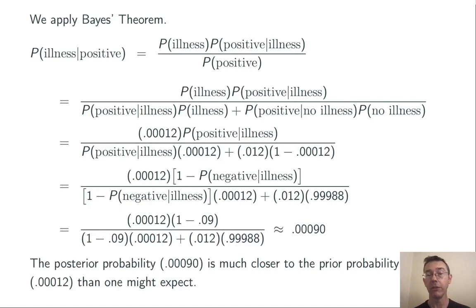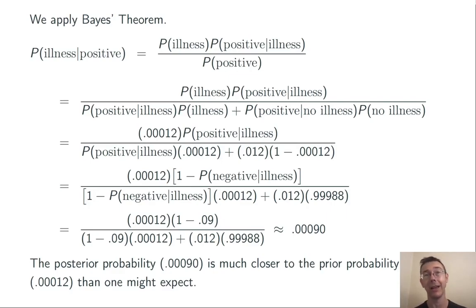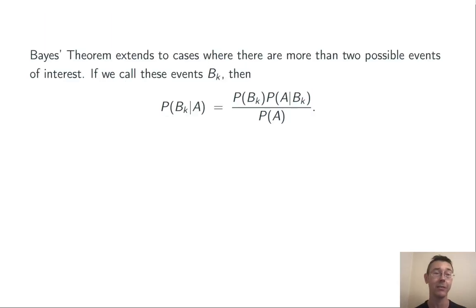Simplifying all of this out, we get about 0.00090. That's the posterior probability. Notice that it's much closer to the prior probability, 0.00012, than you might expect. So the fact that you've tested positive is not an ironclad guarantee that you actually have the illness in this case.